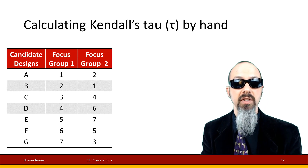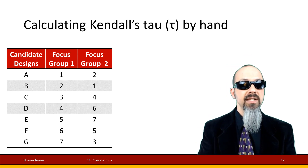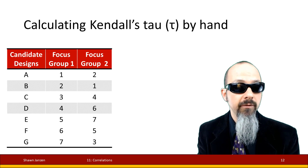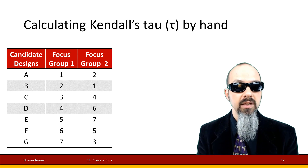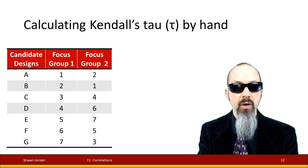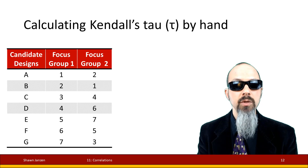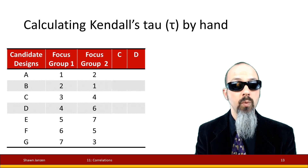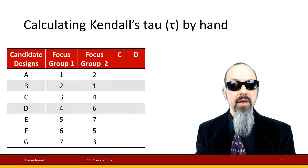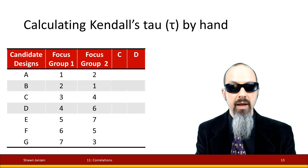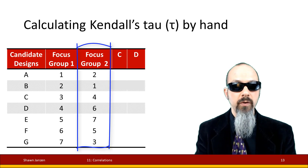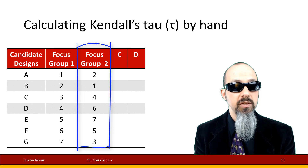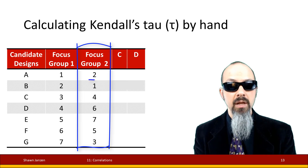Let's take an example and calculate Kendall's Tau. Think of these as design candidates for a UX research study — designs A through G — looked at by two different focus groups. Each focus group ranked the different designs on their levels of preference. Focus group one is ordered from 1 to 7, and focus group two also ranked them. We're going to see how these ranks compare. I add two columns for C (concordance) and D (discordance) and start with design A.